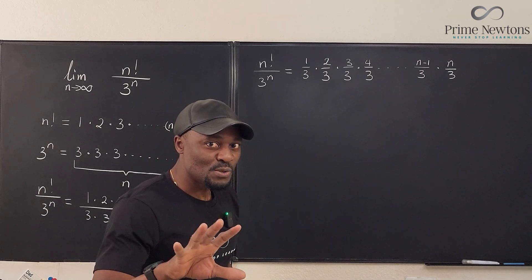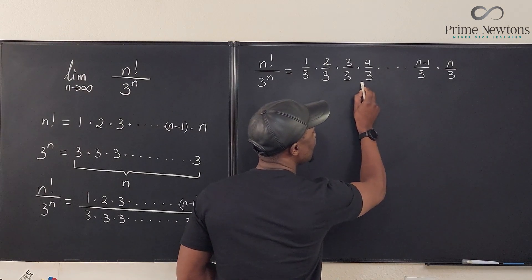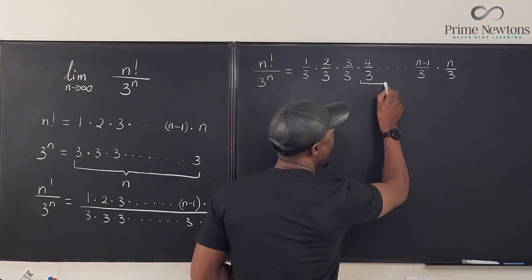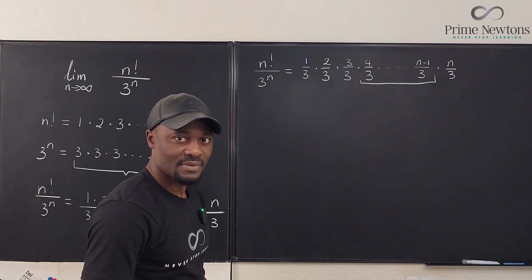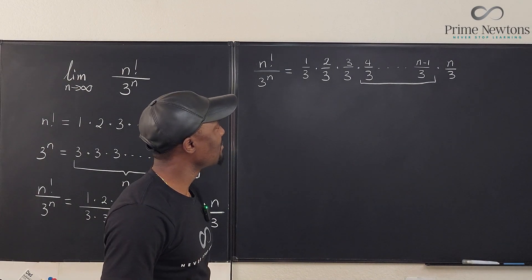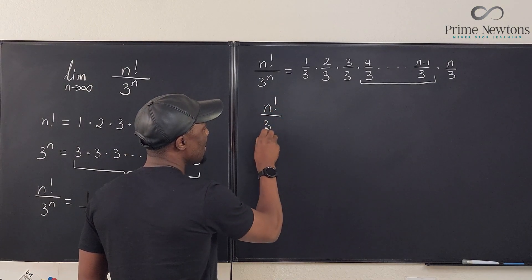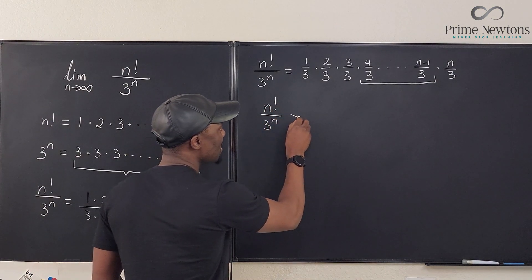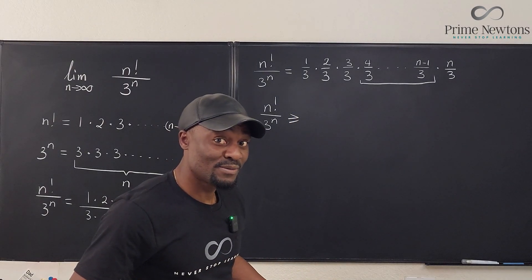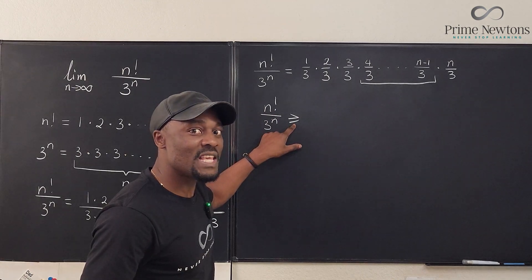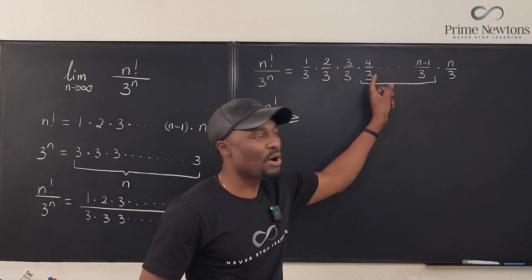So if I choose to delete all of these, I delete everything here. If I take everything here out of this multiplication, and I say, you know what, I can claim that n factorial over 3 to the n must be greater than or at least equal to anything I write with any part of this missing. Because the full thing is all of this.